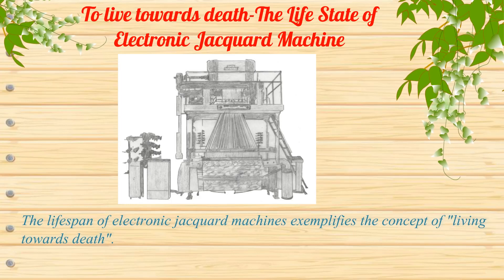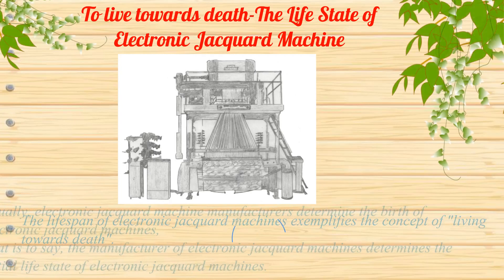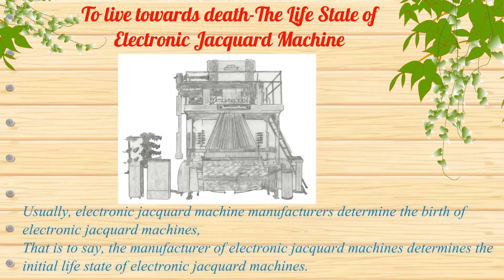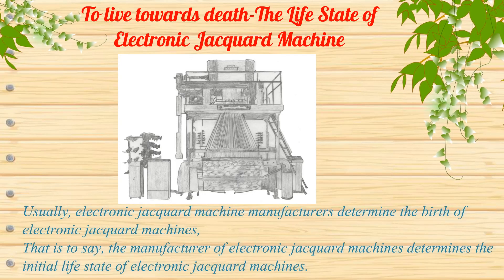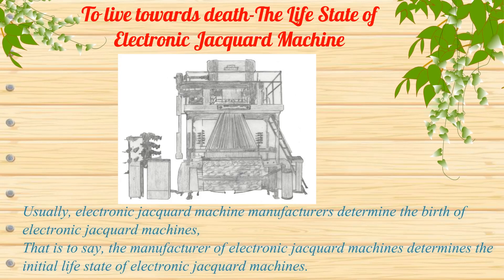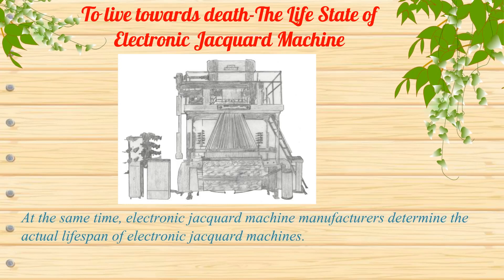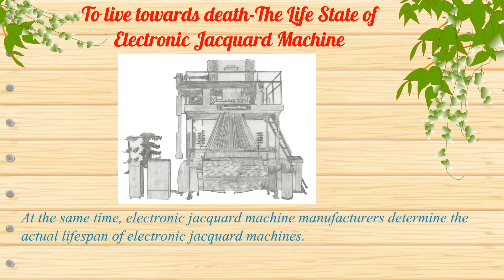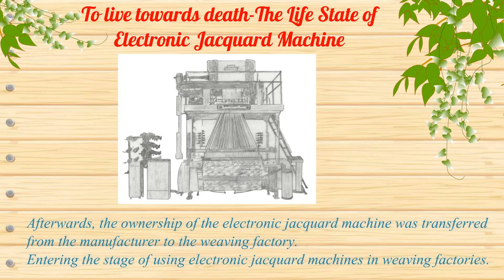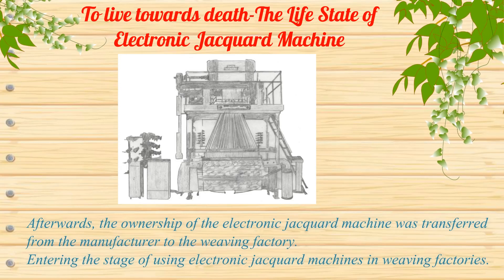The lifespan of electronic jacquard machines exemplifies the concept of living towards death. Electronic jacquard machine manufacturers determine the birth and initial life state of these machines, as well as their actual lifespan. Afterwards, ownership of the electronic jacquard machine is transferred from the manufacturer to the weaving factory, entering the stage of use in weaving factories.